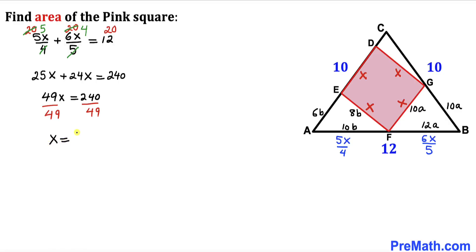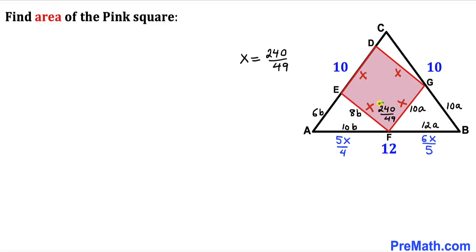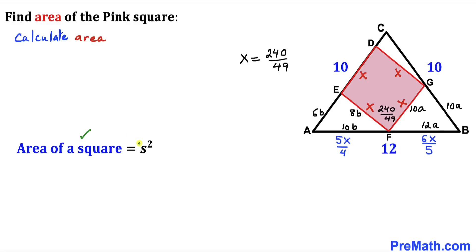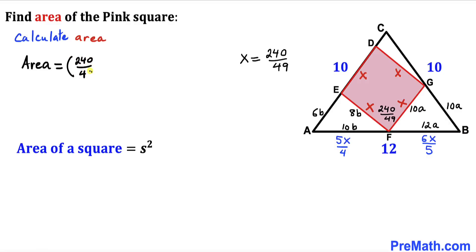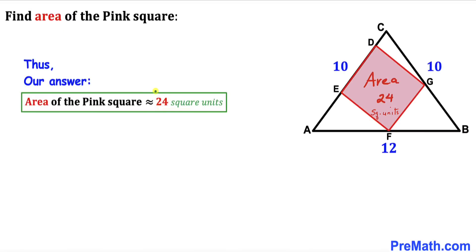Dividing both sides by 49, we get X = 240/49 units. So the side length of the pink square is 240/49 units. For the area, using the formula Area = S², we compute (240/49)², which simplifies to approximately 24 square units. Therefore the area of pink square DEFG is approximately 24 square units.